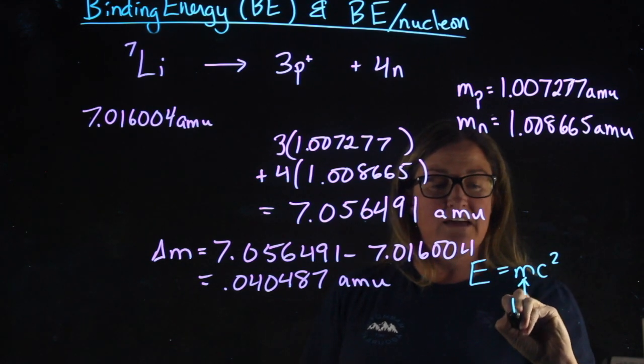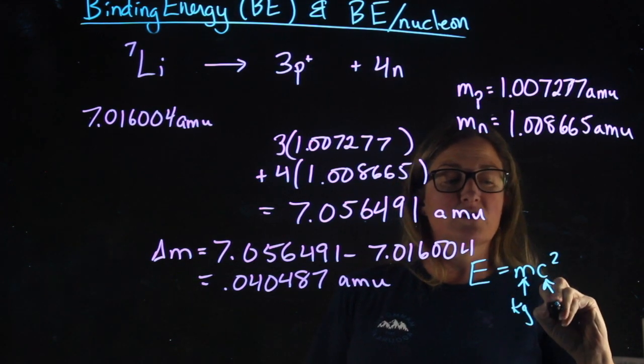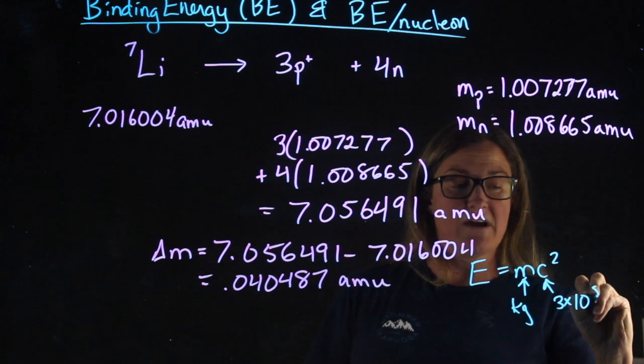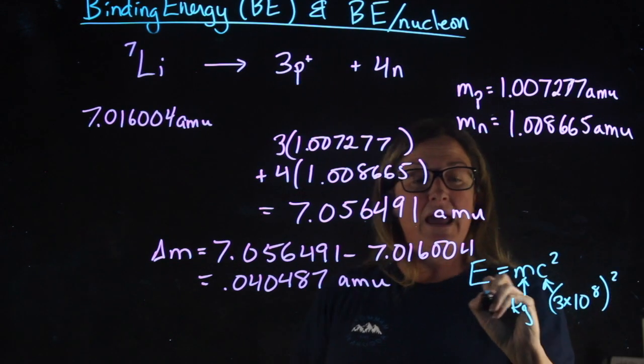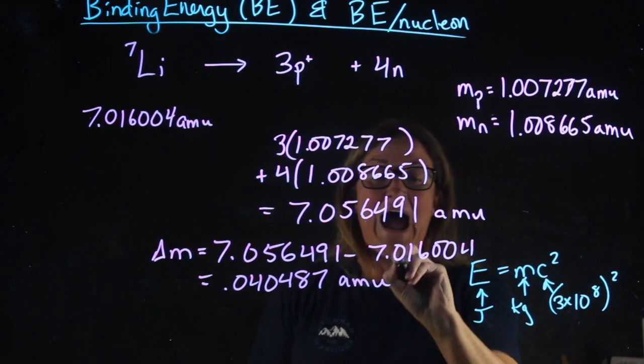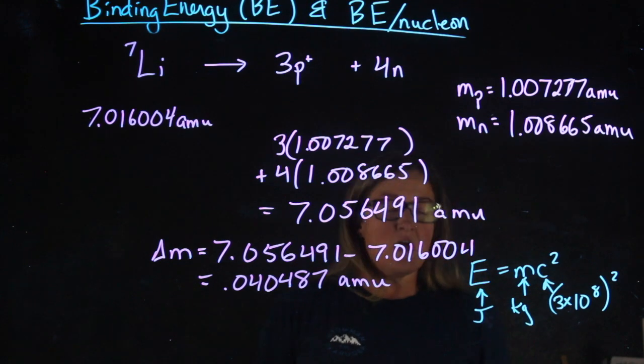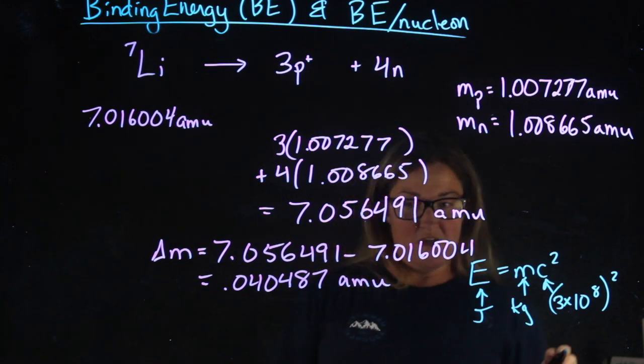If I plug in the mass in kilograms and multiply by the speed of light squared, I get the energy in joules. I don't want to convert this to kilograms, so we have a shortcut that we use.